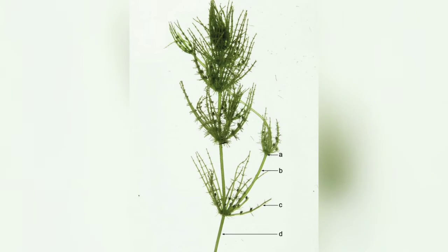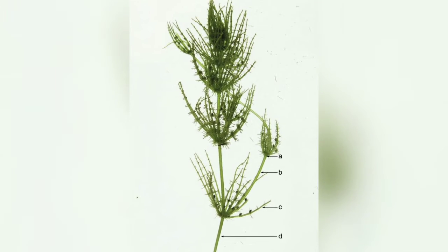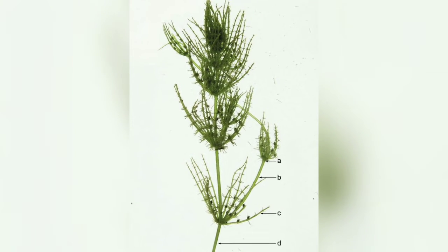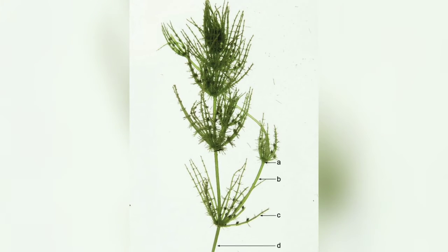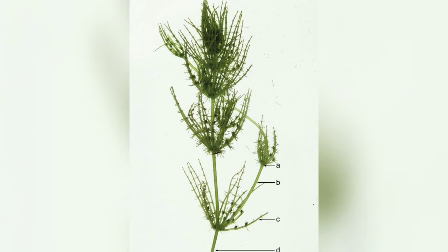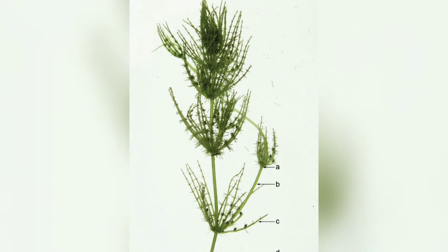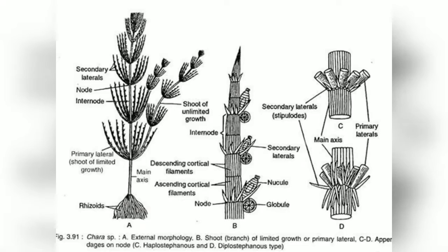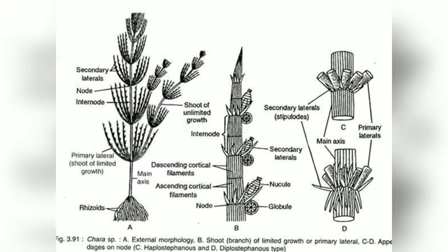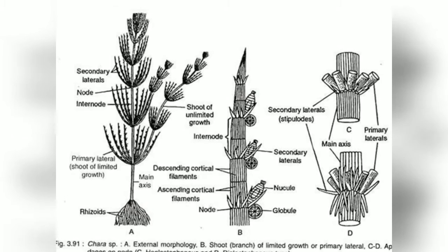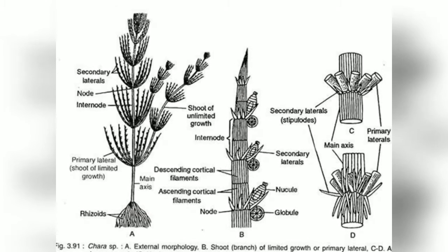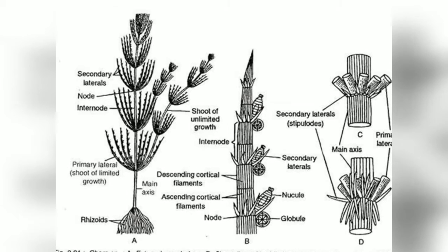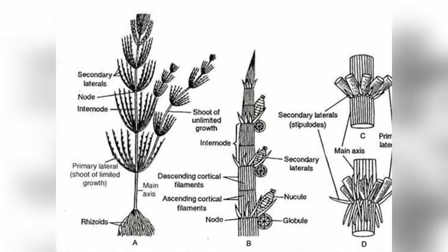Now, growth of Chara. In Chara, growth of the main axis and its branches occurs by a dome-shaped apical cell. Transverse divisions of the apical cell produce a row of disc-shaped cells.